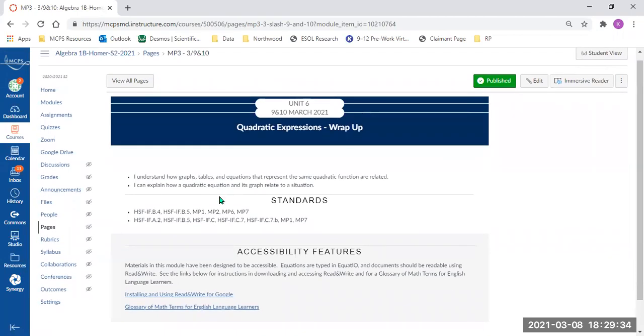So we are doing a little wrap-up on quadratic expressions, making sure that everything is done and tied up with a bow. So I want to make sure that we understand how graph, tables, and equations represent the same quadratic function and how they're related. And I want you to be able to explain how quadratic equations and its graph relate to a situation.